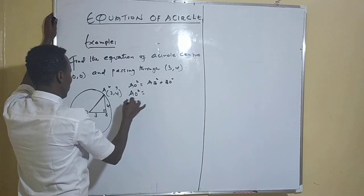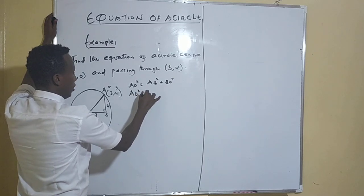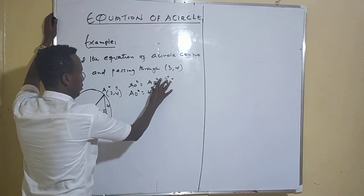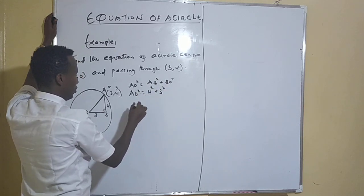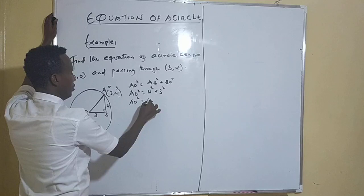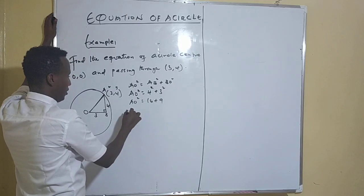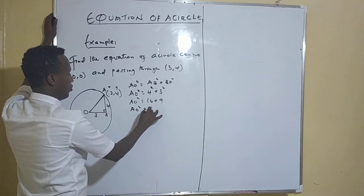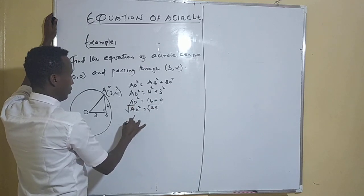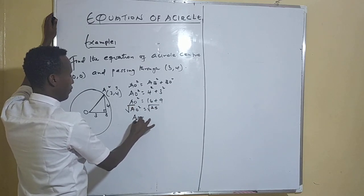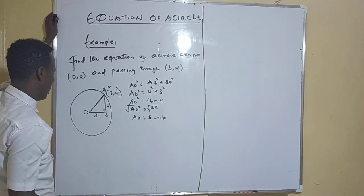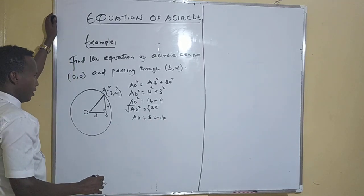So AO squared is equal to four squared plus three squared, which gives us sixteen plus nine. Therefore AO squared equals twenty-five, and introducing the square root, AO — that is the radius — is equal to five units.